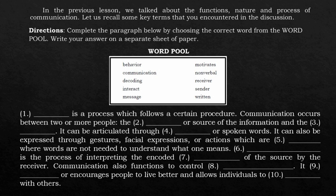Blank is a process which follows a certain procedure. Communication occurs between two or more people — the blank, or source of the information, and the blank. It can be articulated through blank or spoken words. It can also be expressed through gestures, facial expressions, or actions, which are blank, where words are not needed to understand what one means. Blank is the process of interpreting the encoded blank of the source by the receiver. Communication also functions to control blank. It blank or encourages people to live better and allows individuals to blank with others.